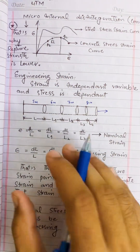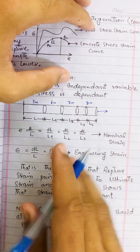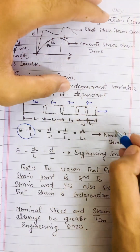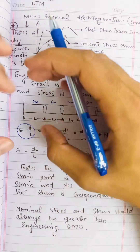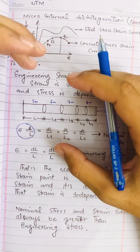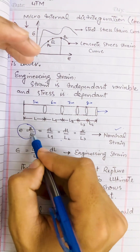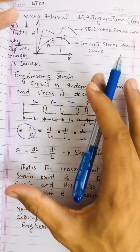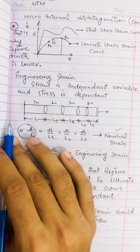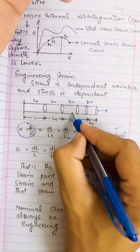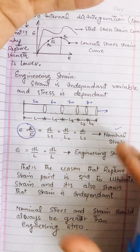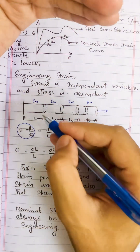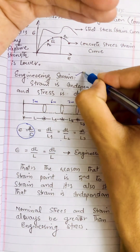If we ignore the increase in length during elongation and use the same original length to calculate strain, we call it engineering strain. But if we consider the increasing length — taking different lengths (L1, L2, L3, L4) at different points during deformation — and calculate strain at each, that gives nominal strain. Engineering strain uses one fixed gauge length; nominal strain uses the updated instantaneous length.